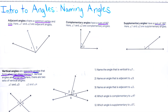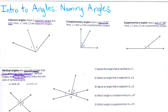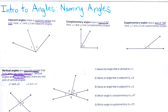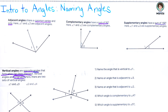For this lesson it's an introduction to angles — we're going to be naming different angles. Let's see the four different kinds we're going to be talking about today. We have adjacent angles, and notice I've marked the text.